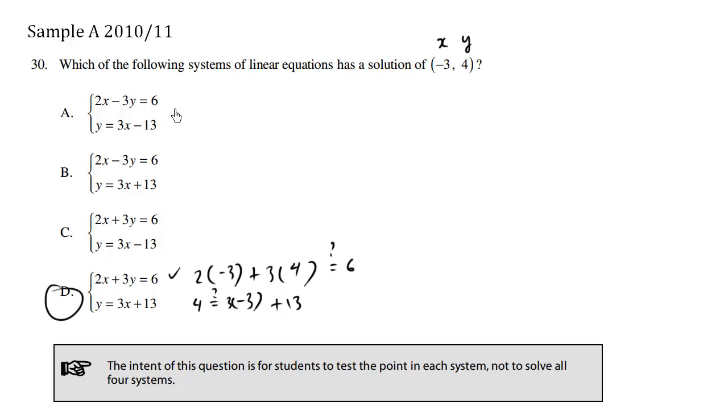So let's try point A just to show you the case. 2x, which happens to be 2 times (-3), minus 3y, y happens to be 4, equals 6. That's the question for this first line equation. This is -6, minus 12 is going to be -18. So immediately, this first line equation does not satisfy the point.